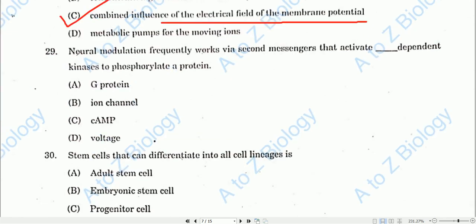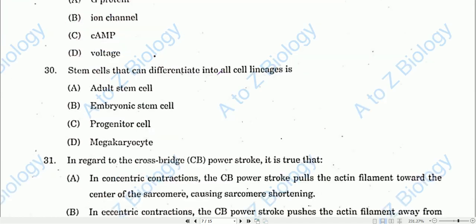Question number twenty-nine: Neural modulation frequently works via second messengers that activate ion channels. This involves ion channel-dependent kinase to phosphorylate proteins, and calcium ions are mostly used in this process.